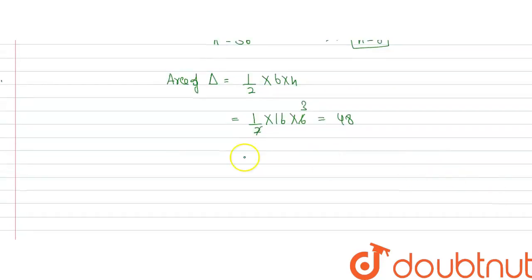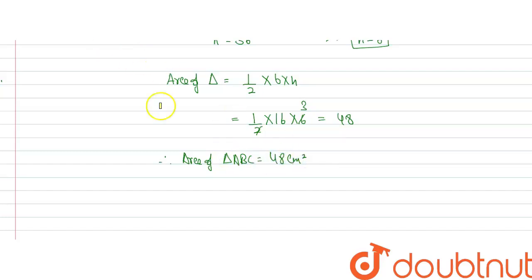Therefore, area of triangle ABC will be equal to 48 cm squared, which is our answer.